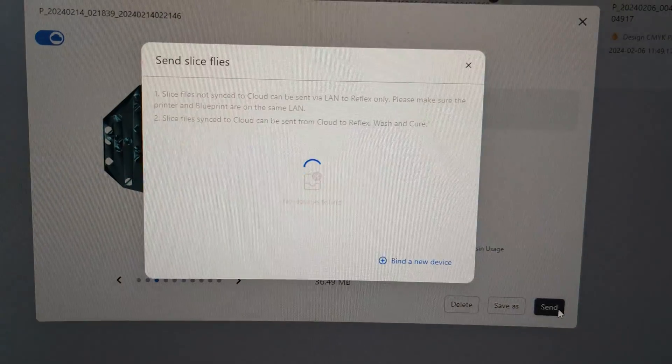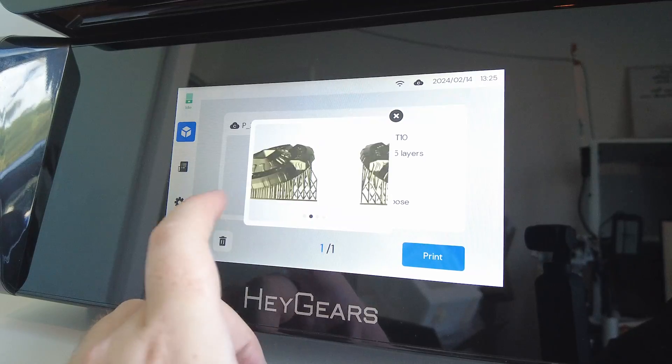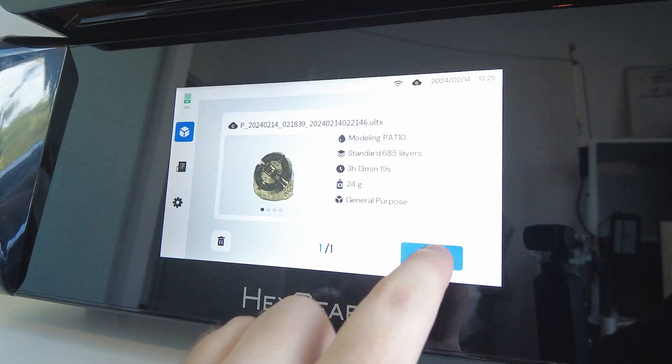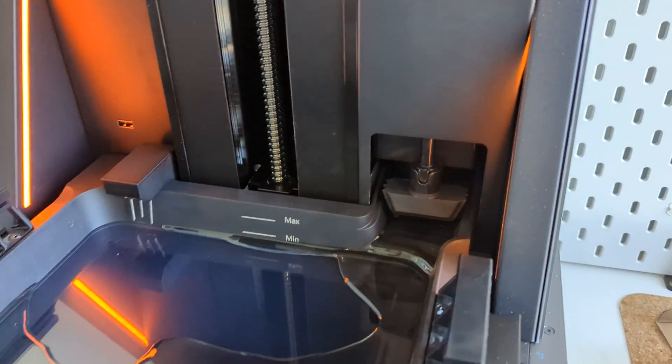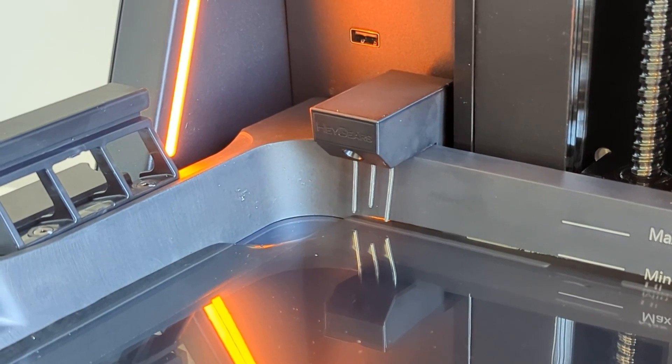And then when it finished slicing I could send it wirelessly over to my printer. You already saw me load the transparent filament in the back and the resin tank and build platform are already installed, so I can just press start to begin the print and watch as the gate opens to let resin flow in. The resin sensor we installed previously will then tell the printer when there's enough resin and then close the gate.